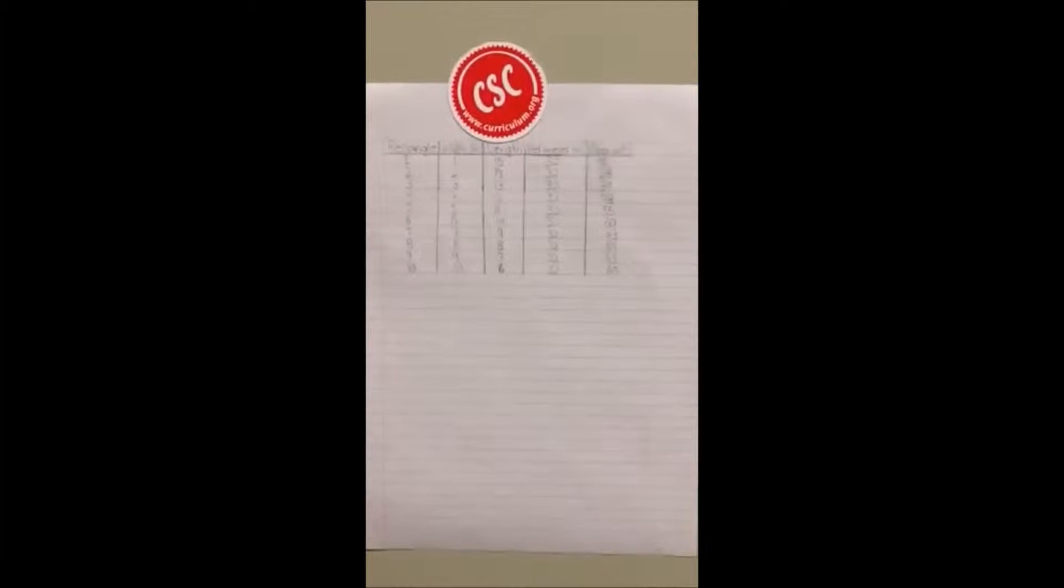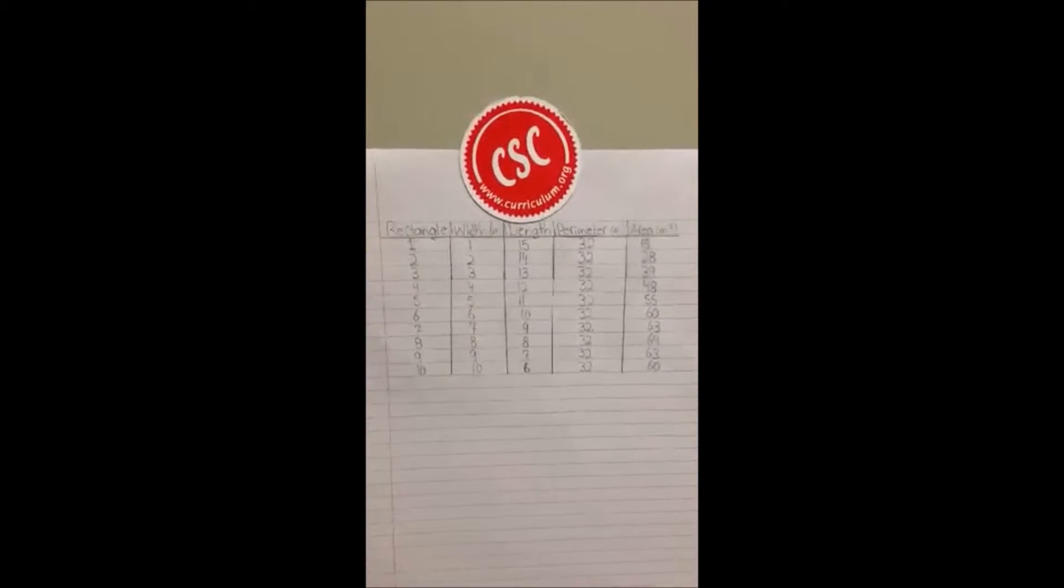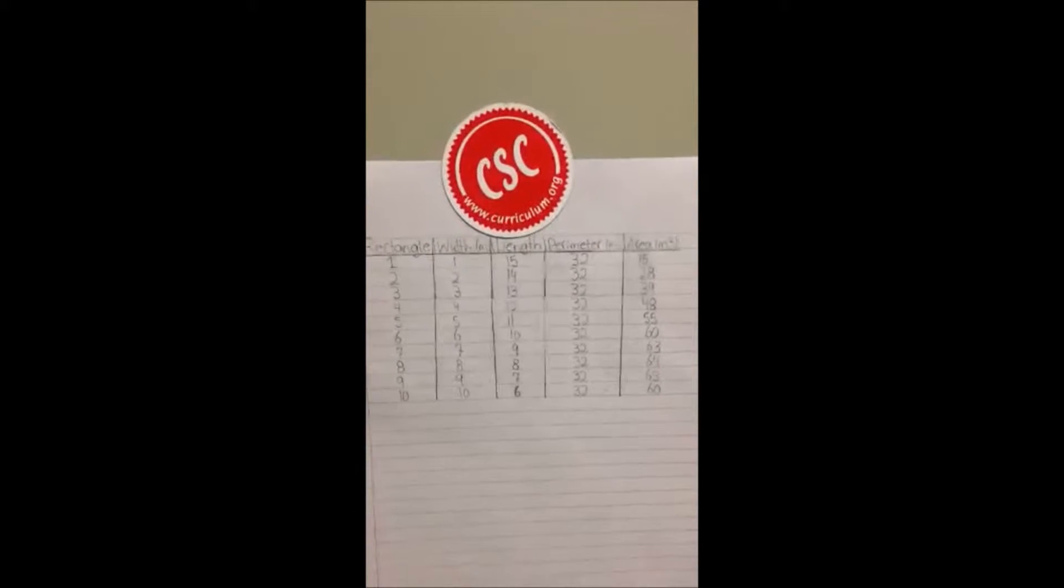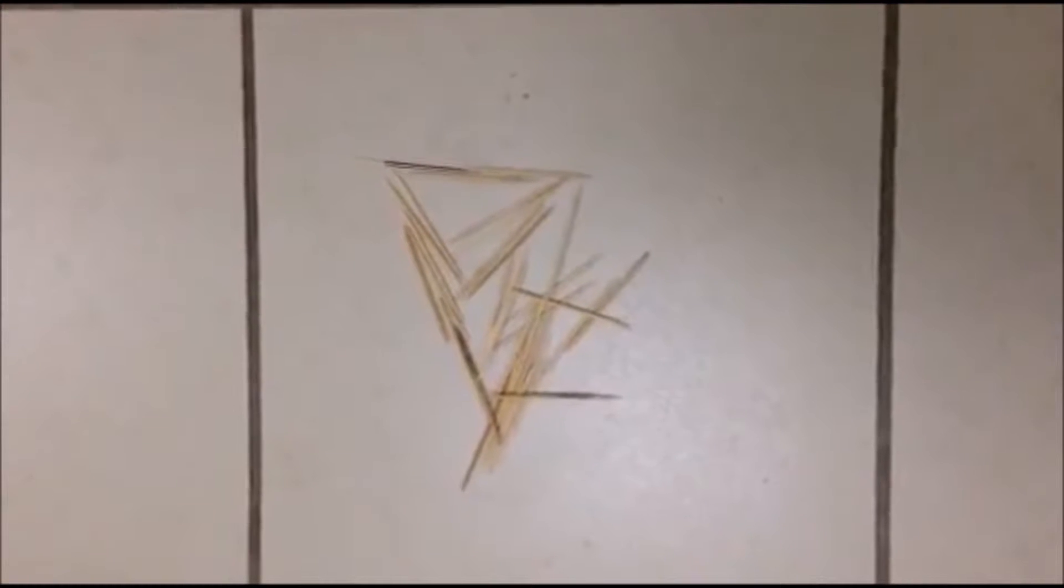Using various models and graphs, we will find out what the maximum area is for a rectangle using the perimeter of 32 toothpicks. This is the graph for different perimeters and toothpicks. Now we will make models of rectangles using each toothpick.